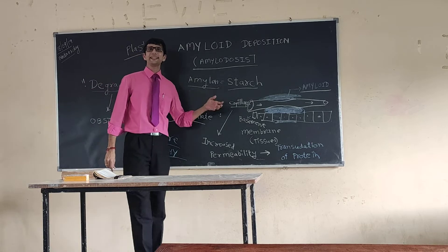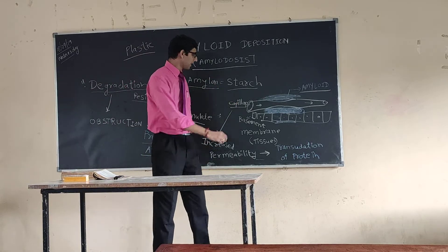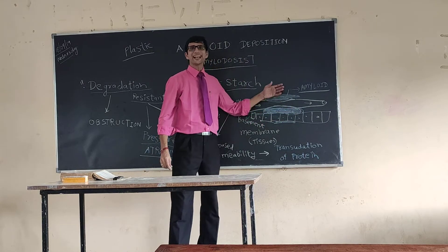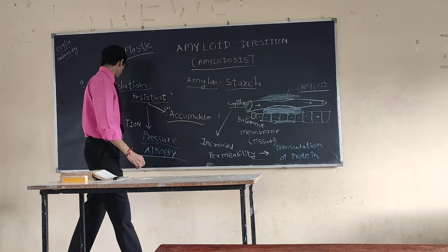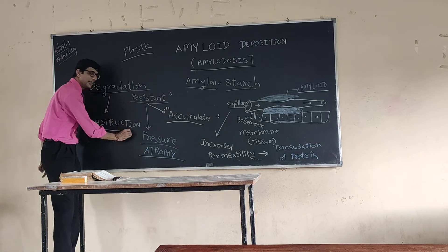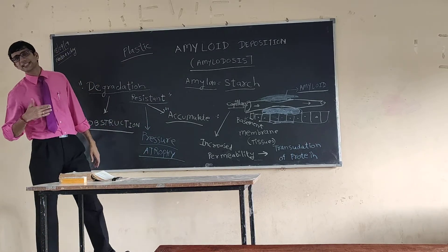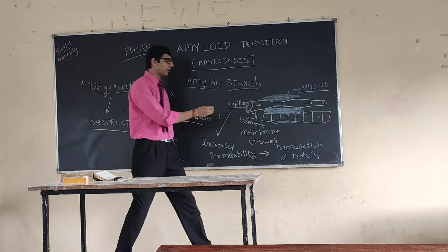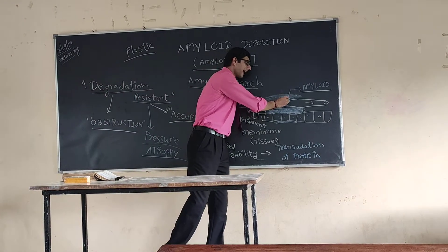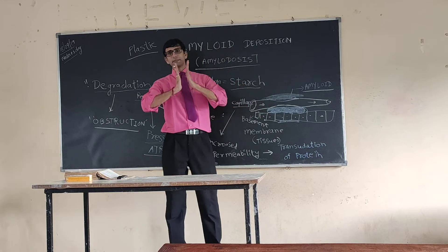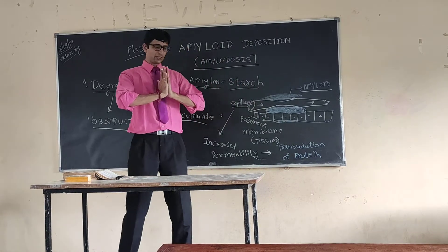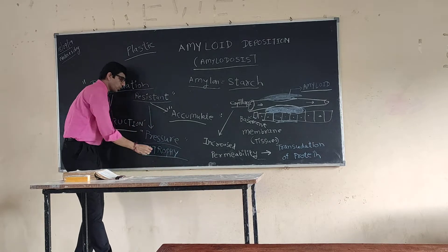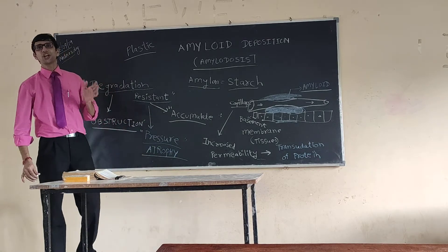By repeatedly getting accumulated, it starts giving pressure to surrounding tissues as well as capillaries. Then gradually this pressure increases and it can narrow down the diameter of the artery, and gradually it can sometimes even obstruct the artery. So in surrounding tissues it causes pressure atrophy.